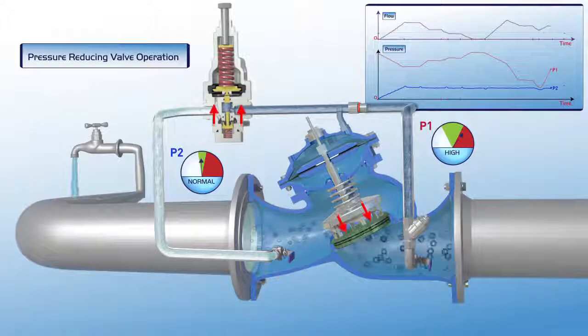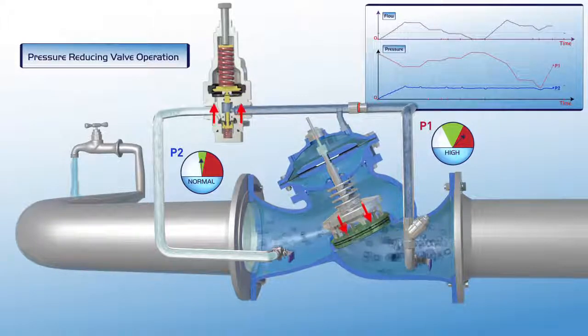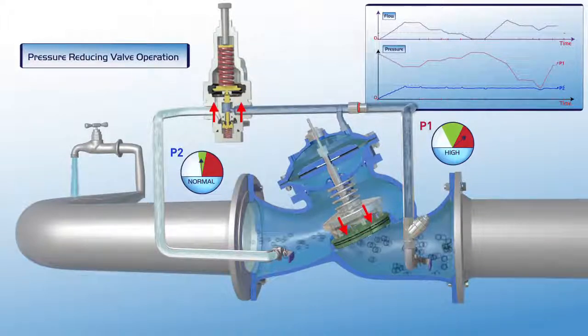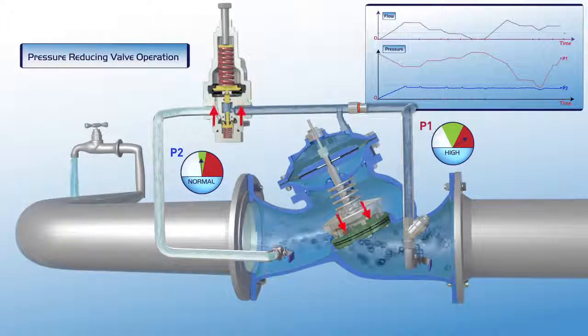When upstream pressure rises again, the valve responds by gradually closing slightly, thus maintaining P2 downstream pressure within its green zone settings.